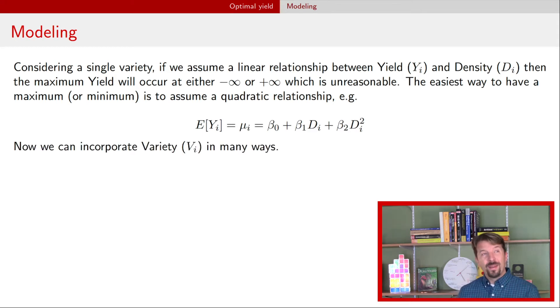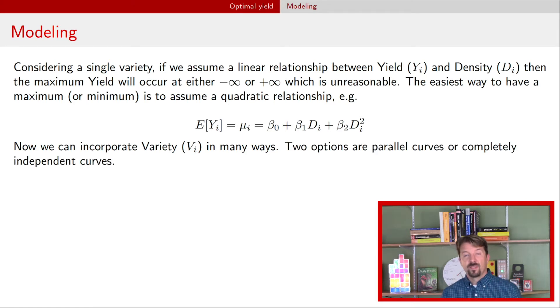Alright and now there are many different ways within this model that we could incorporate variety. Generally the options are - well we're actually going to throw out three options. Number one is we're going to assume that variety has no effect and that would just have this equation for density.